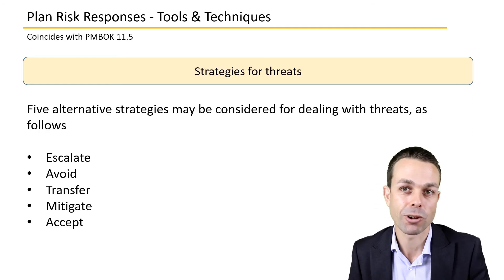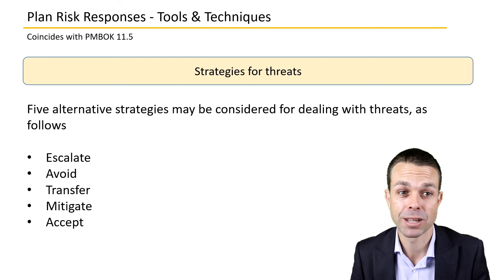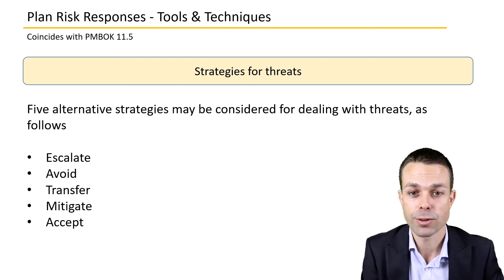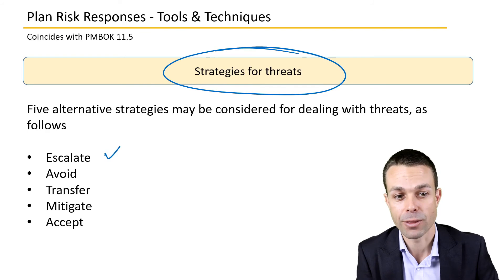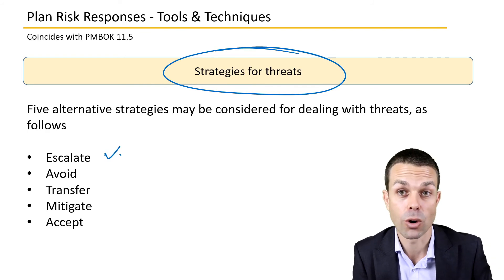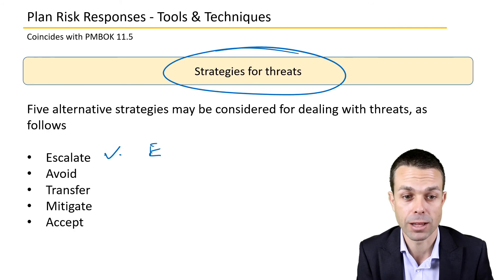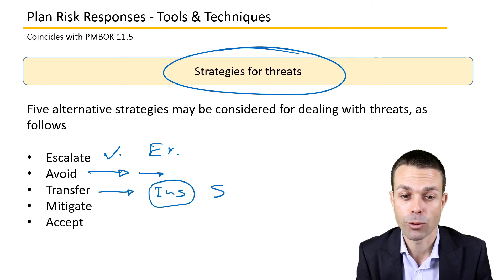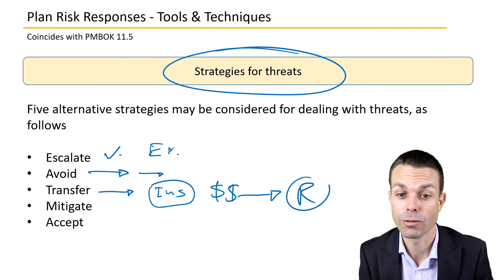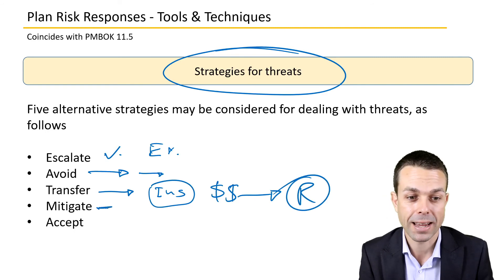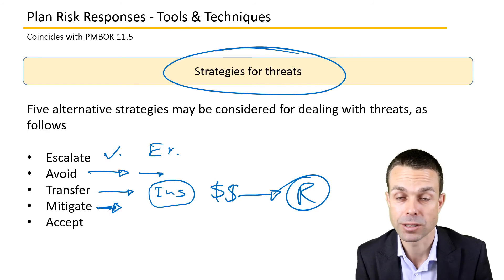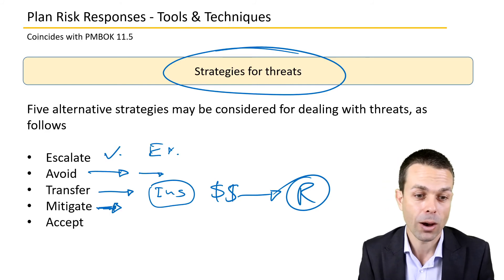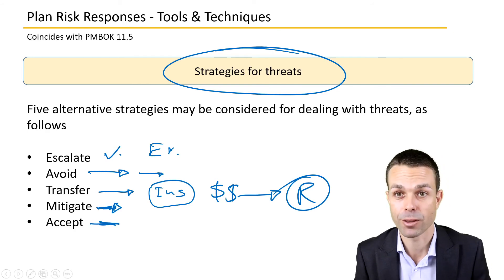There are strategies for threats that you'll see in the key concepts for risk management. Strategies for threats include: escalating to an authority beyond the project such as an executive level; avoiding it or waiting for another time; transferring it to another party — usually through insurance, where you pay for a policy and they take on all the risk; mitigating it by taking steps to reduce the risk through your own processes or people; or simply accepting it if the risk is small enough.